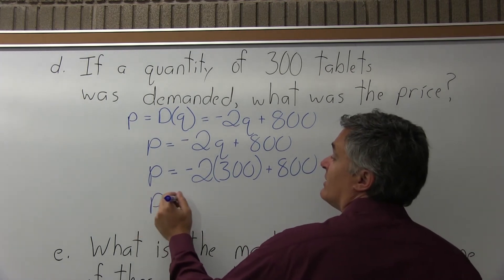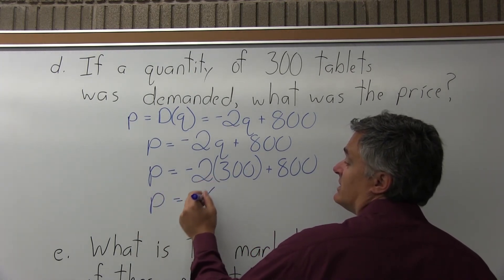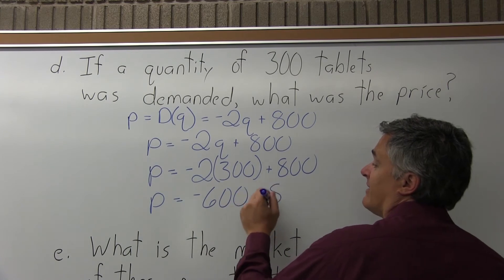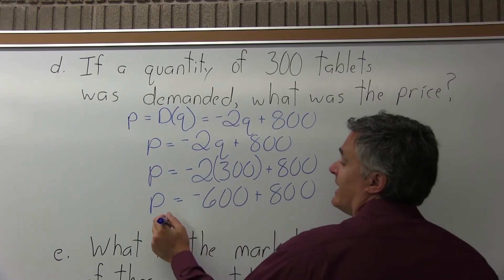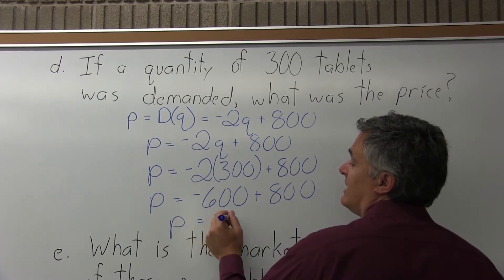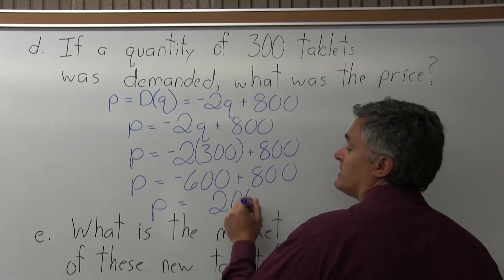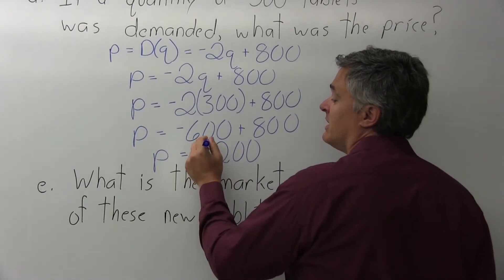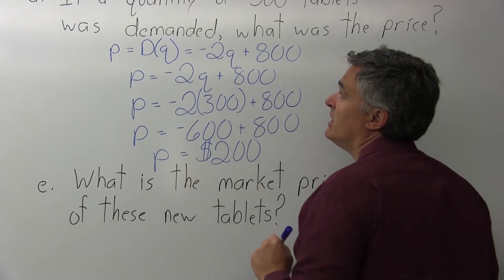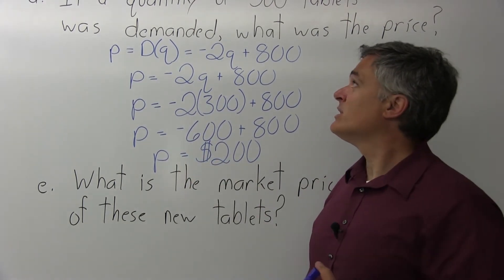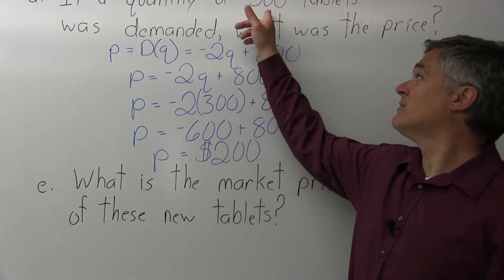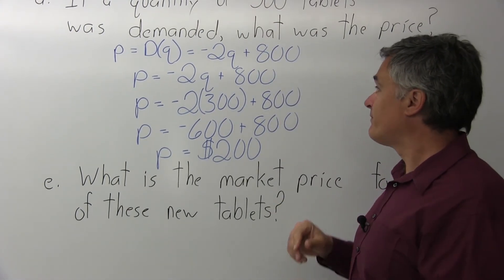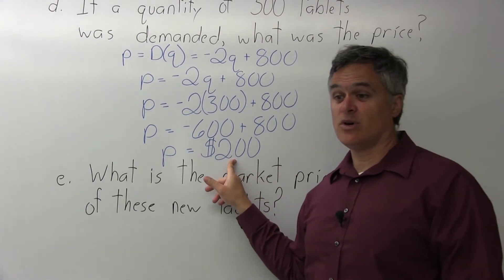P equals negative 2 times 300 plus 800. Negative 2 times 300 is negative 600, and adding that to 800 gives positive 200. So P equals $200. If shoppers were willing to purchase a quantity of 300 of these computer tablets, the price must have been $200 each.